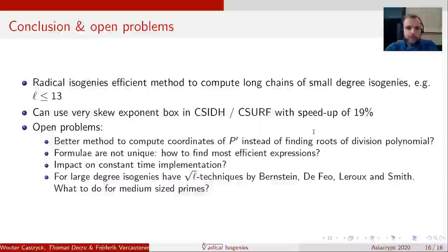Now we'll give some concluding thoughts. So we find a very efficient method to compute long chains of small degree isogenies. And if we use a very skew exponent box in CSIDH, we can speed it up by about 19%. Now there's some interesting open problems that we can consider. First of all, as said before, the division polynomial is sort of a bottleneck, starting from L equals 17 already. Can we find roots of the division polynomial efficiently? And if we can find roots of that, the formulas are not unique. As mentioned earlier, we can use P prime or 2P prime. They generate the same kernel, which one gives us the most efficient expression? They are not all equal in terms of arithmetic complexity.